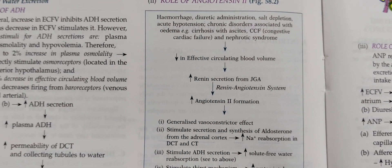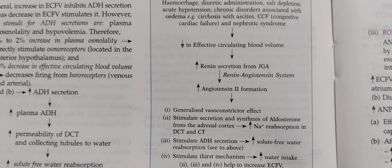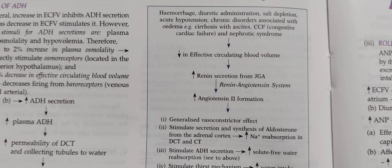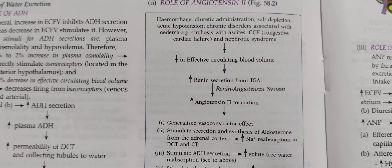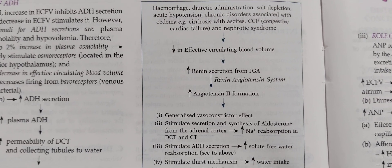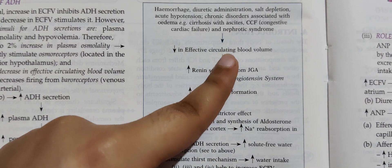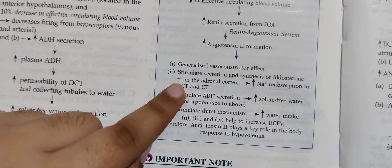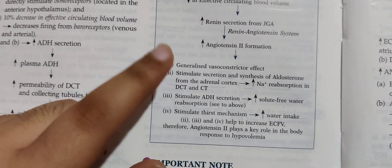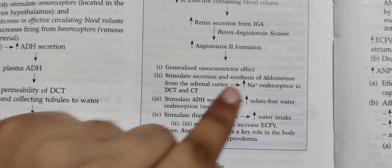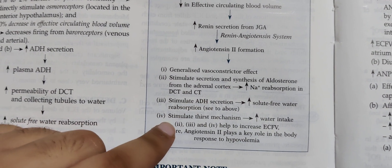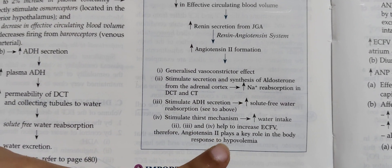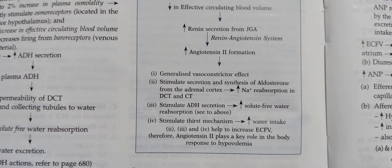Next is angiotensin 2. Angiotensin 2 is formed from renin, and the main stimulus for renin is a decrease in effective circulating blood volume. The functions of angiotensin 2 are: vasoconstrictor effect, a pressure effect, stimulation of aldosterone secretion which increases sodium reabsorption, stimulation of ADH, and stimulation of the thirst mechanism. All of these increase ECF volume. Therefore, angiotensin 2 plays a role in the body's response to hypovolemia.